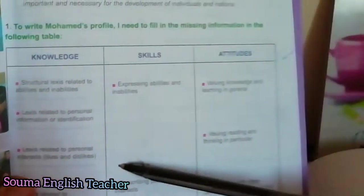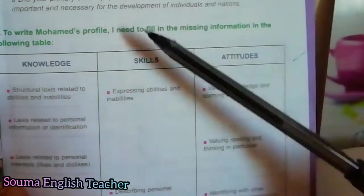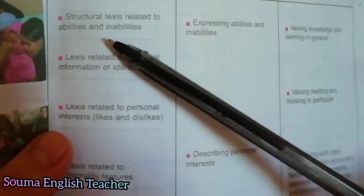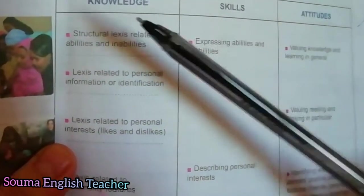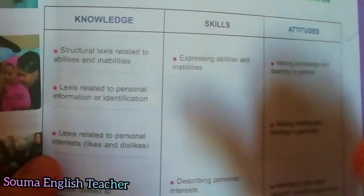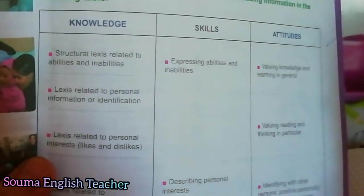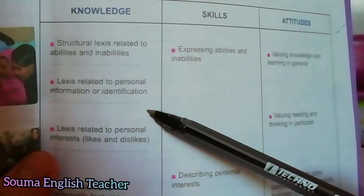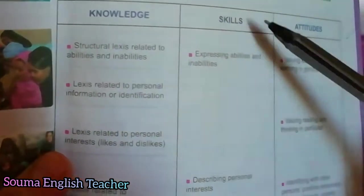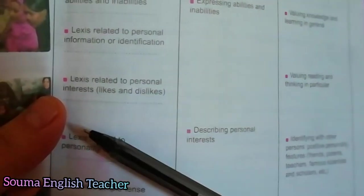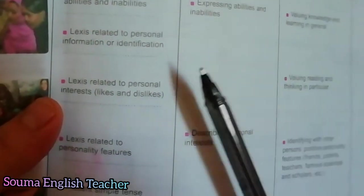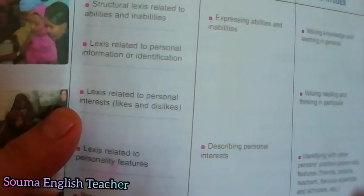As we write the profile, we need to create two paragraphs. First, the axis related to abilities and inabilities — we can use 'can' and 'can't.' Lexis related to personal information or identification. Lexis related to personal interests — likes and dislikes. We can use: 'He is interested in,' 'He likes something,' 'He doesn't like,' etc.